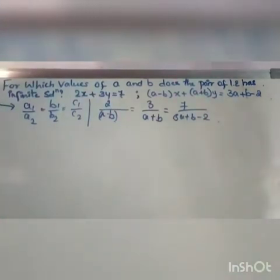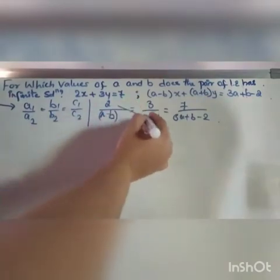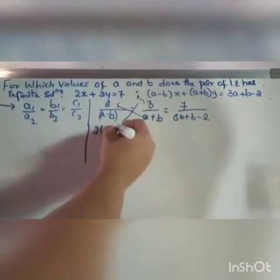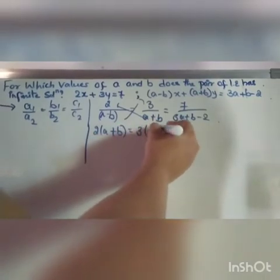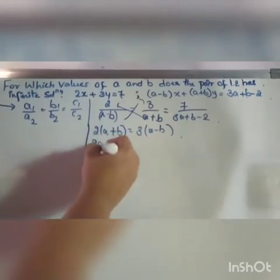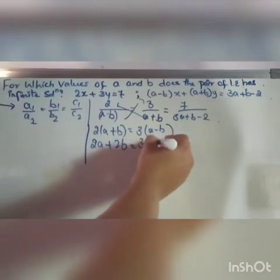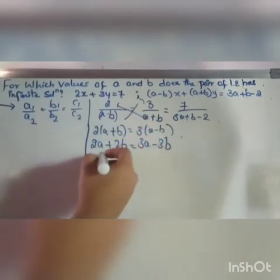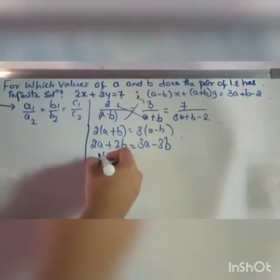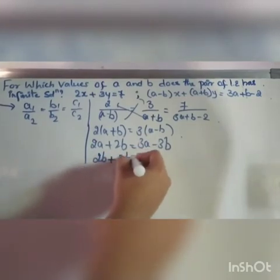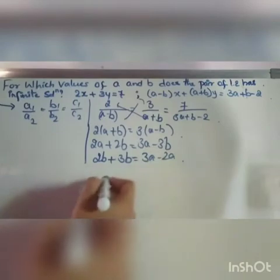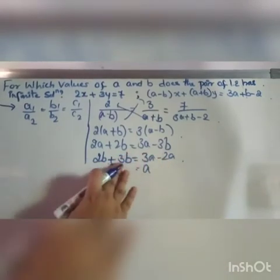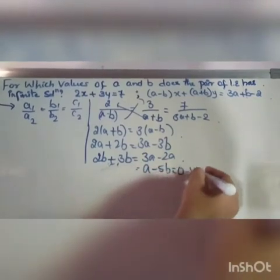Taking the first two ratios: 2/(a − b) = 3/(a + b). Cross multiplying gives 2(a + b) = 3(a − b), so 2a + 2b = 3a − 3b. Rearranging: 2b + 3b = 3a − 2a, which gives 5b = a, or a − 5b = 0. This is our first equation.